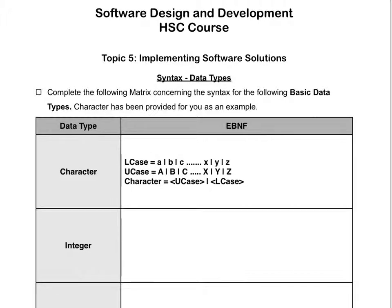So we're going to focus on constructing this for an integer. We just need to understand firstly what are some examples of integers. So 3 is an example of an integer. Plus 101 is an example of an integer. Minus 274 is another example of an integer. So we need to create some rules that will represent anything following that type of format.